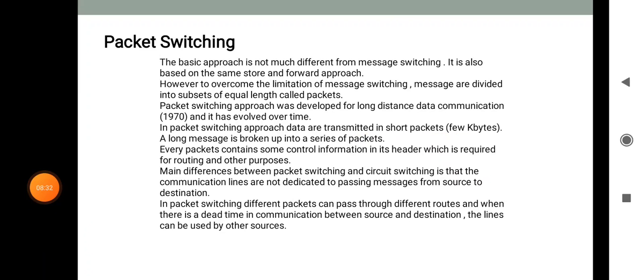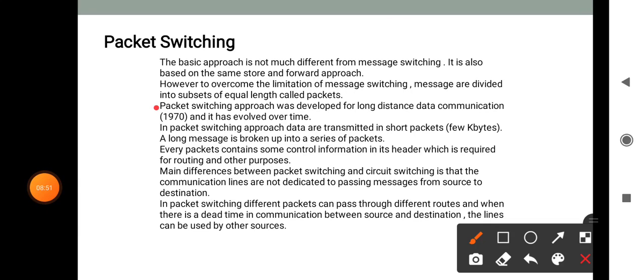The third type is packet switching. The basic approach is similar to message switching, based on the same store-and-forward concept. However, to overcome the limitations of message switching, messages are divided into equal-length subsets called packets. The packet switching approach was developed for long-distance data communications in 1970 and has evolved over time. Data is transmitted in short packets of a few kilobytes; a long message is broken up into a series of packets. Every packet contains control information in its header required for routing.